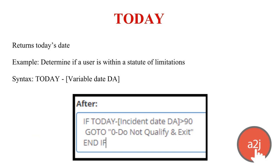TODAY returns today's date and can be used, for example, to determine if a user is within a statute of limitations — testing whether today minus an incident date is greater than 90 days. If it is, the user is past the statute of limitations and sent to a disqualification screen. TODAY is also special in that it can be used in calendar fields as a minimum or maximum restriction: setting TODAY as the minimum prevents users from entering a past date; setting it as the maximum prevents a future date.